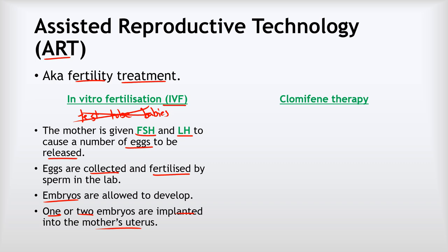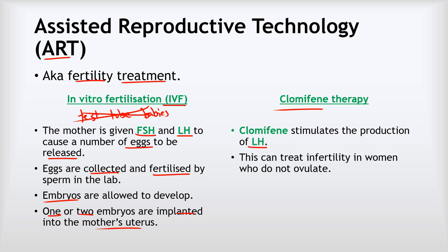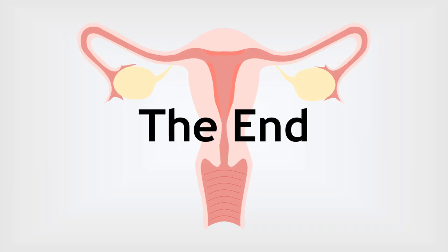Another kind of treatment is clomiphene therapy. Clomiphene is a drug that stimulates the production of large amounts of LH, and it can be used to treat infertility in women who don't ovulate. For example, some women mature eggs every menstrual cycle but those eggs never escape the ovaries because they aren't producing enough LH. Thank you for listening, and well done if you got this far.